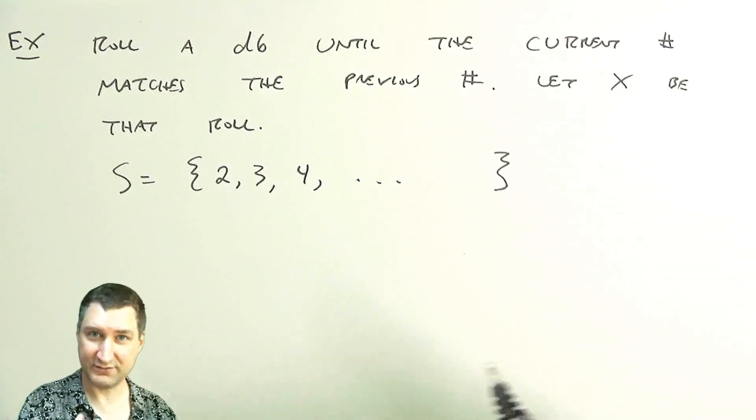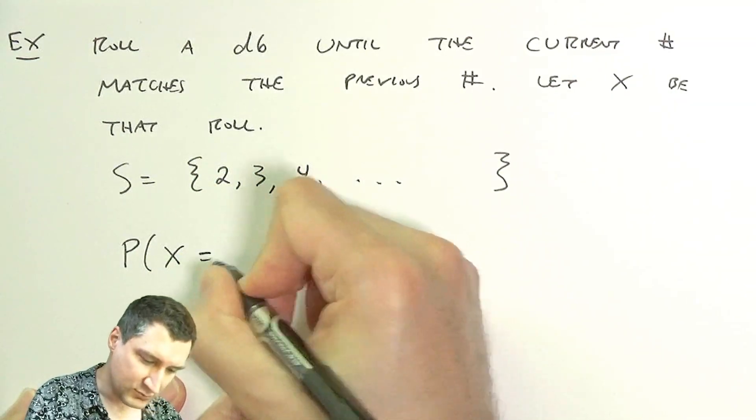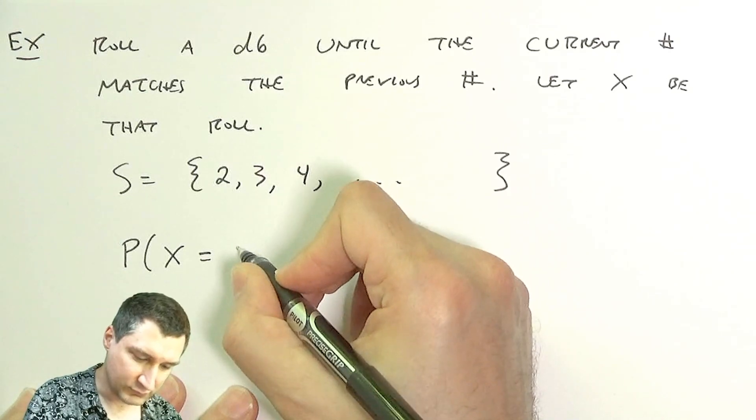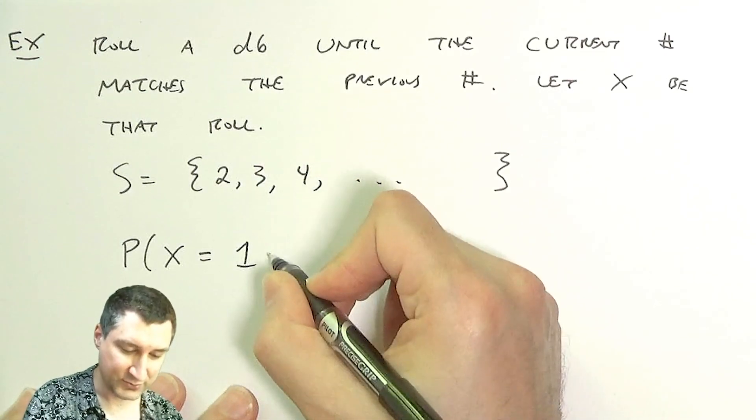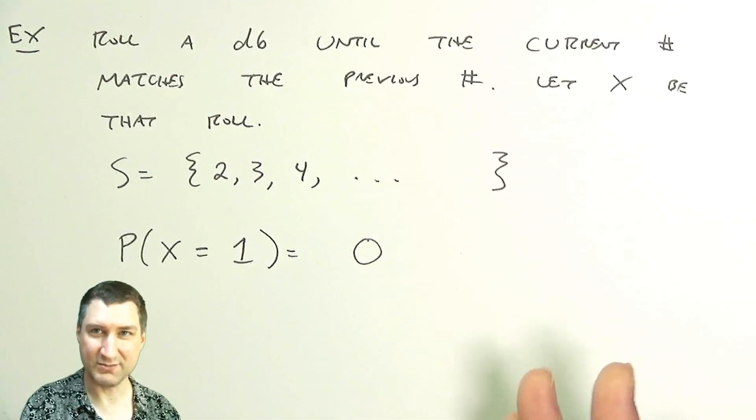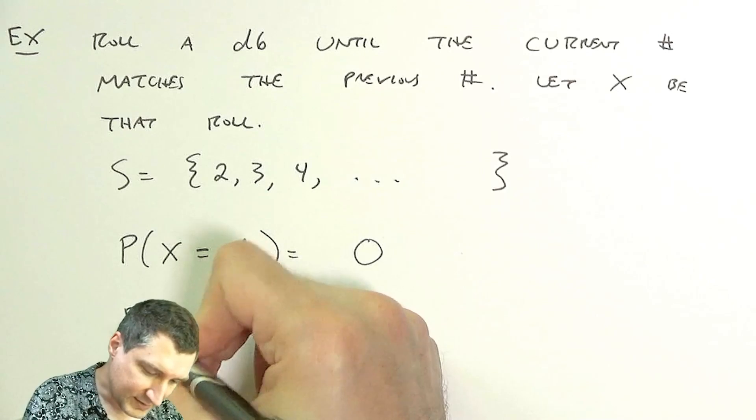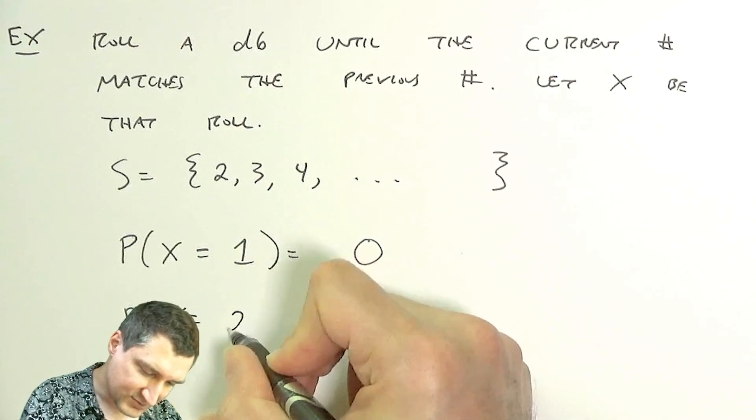Let's try and actually nail down these probabilities. The probability that X is equal to 1 is zero. This is not even an outcome in the sample space; this is kind of like the null set. The probability that X is equal to 2 is one-sixth.